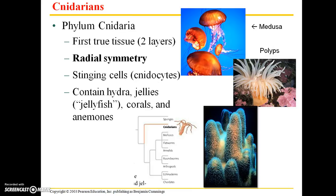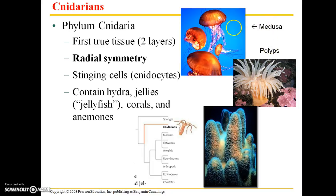Phylum Cnidaria are perhaps most commonly represented by the jellies — commonly called jellyfish, but they're not actually fish. These animals represent the first animals to evolve with true tissue layers — they have two layers of tissues. They have radial symmetry and cnidocytes, which are stinging cells. Notice that cnidaria and cnidocytes are very similar — the phylum was actually named for the stinging cells. In addition to jellies, there are hydra, corals, and anemones. There are two body forms common in this phylum: there is the medusa.